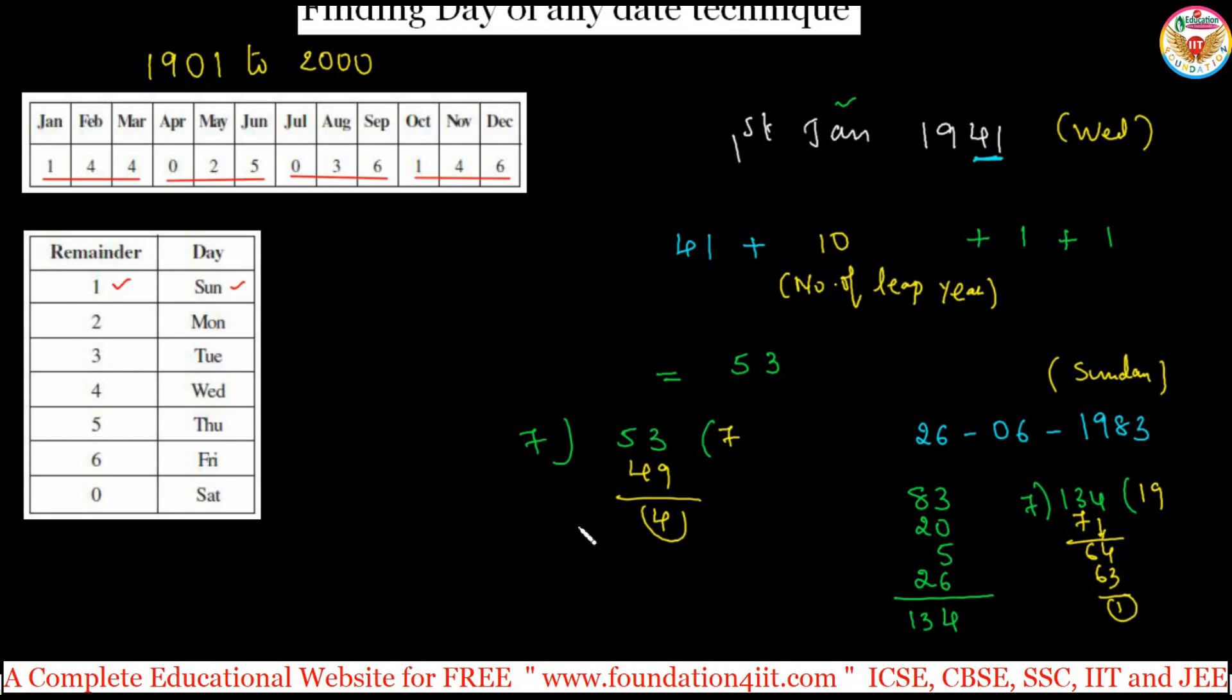One small exception is important. In case the year is a leap year and the month is either January or February, we should reduce one.